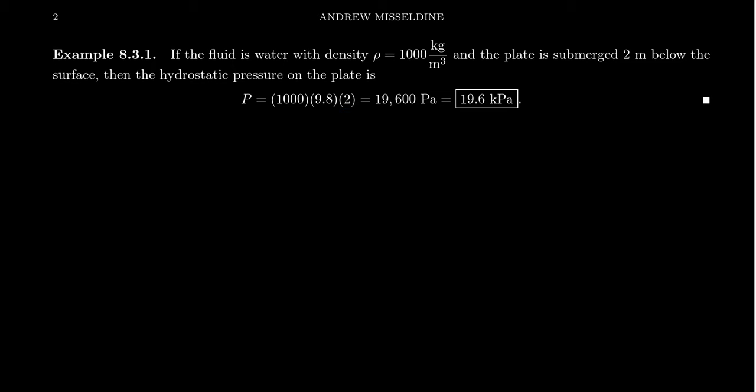In which case that then gives us, when you multiply that together, you'll get 19,600 pascals. One pascal is actually not a large amount of pressure. So oftentimes we'll write this as kilopascals. So you see that this object, this plate, when it's submerged two meters, will experience approximately 20 kilopascals of pressure. And so calculating hydrostatic pressure is not too much of a challenge here. We basically just need to know the depth and the density.